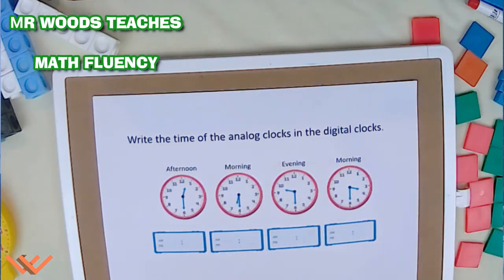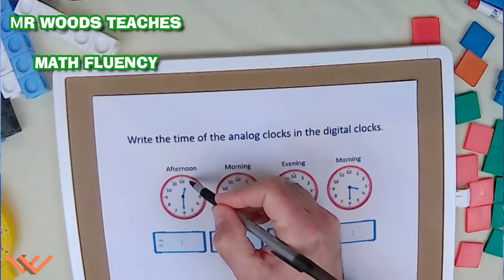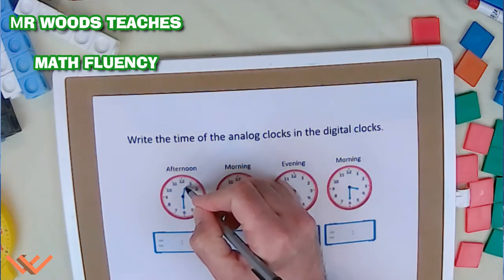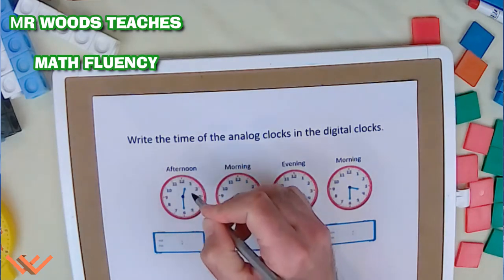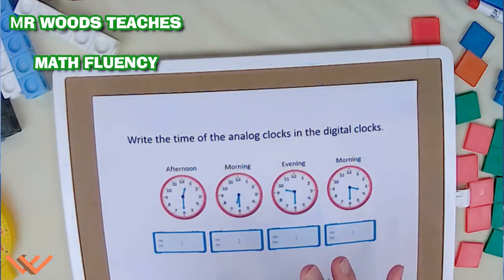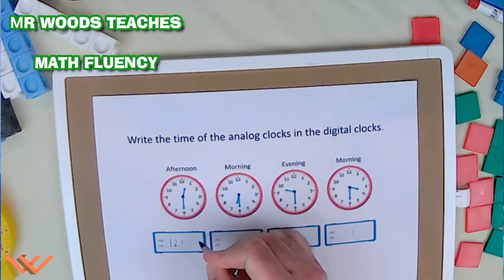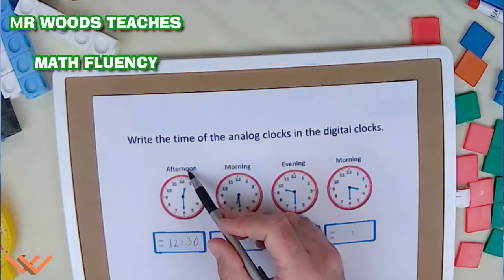Well, what does that mean, Mr. Woods? Well, let's take a look here. So we have, again, our hour hand is pointing between the 12 and the 1. Okay? So we go to the next number back. Now, 12 is not smaller than 1, but when telling time, it is. So this is early in the morning. This is 12-30. Wait, I said early in the morning, or it could be early in the afternoon. Notice it says afternoon.